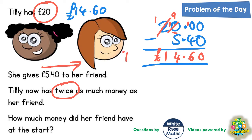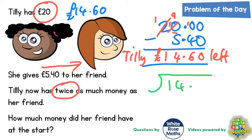So Tilly has £14.60 left, and we are told she now has twice as much money as her friend. So this £14.60 must be twice as much as her friend has, meaning if we halve that we'll find out how much the friend's got. So we need to do half of £14.60 — that's £14.60 divided by 2. 2s into 14 goes 7 times, 2s into 6 goes 3 times, 2s into 0 goes no times. So that's £7.30.